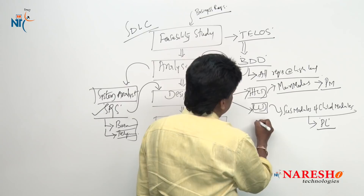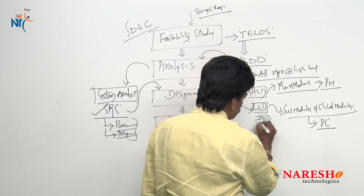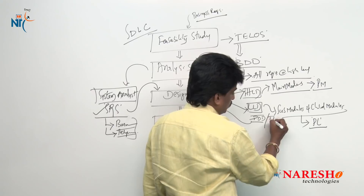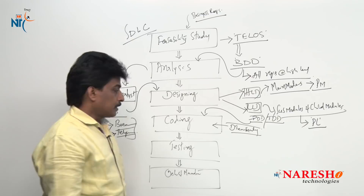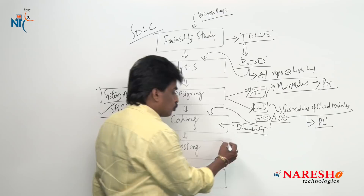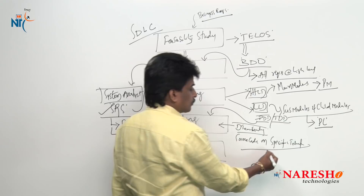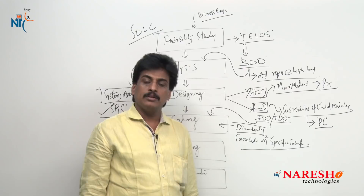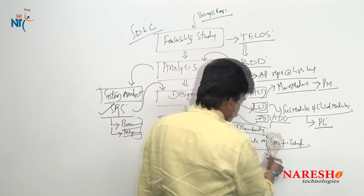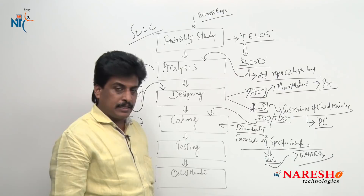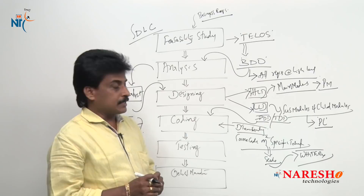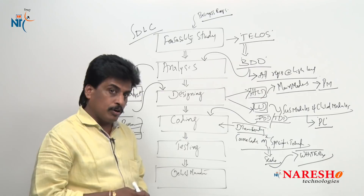In the designing phase, the output document is called the Project Design Document or Technical Design Document — different alias names are available. It is input to the coding phase. In the coding phase, the total development team is involved and they develop the complete source code on a specific technology like Java, PHP, .NET, or Python. Once the source code is implemented, they perform white-box testing. White-box testing is always done by the software developer or engineer, never by a test engineer. After successful white-box testing, it moves to black-box testing.